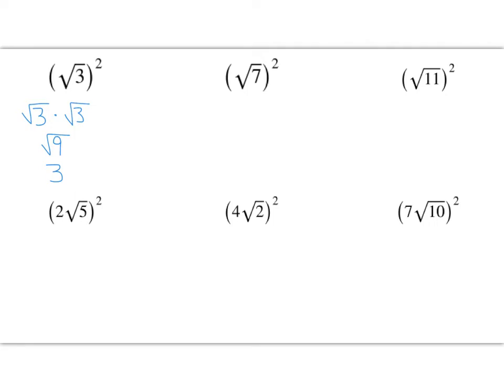So, the square root of 7, squared, would be 7. The squaring and the square root are inverse operations — they undo one another and you end up with the number under the radical. What is the square root of 11, squared? It is 11. When you square a square root, you get the radicand.